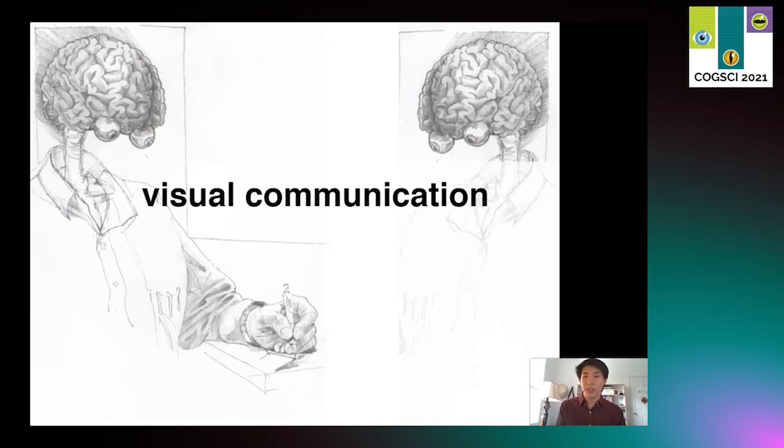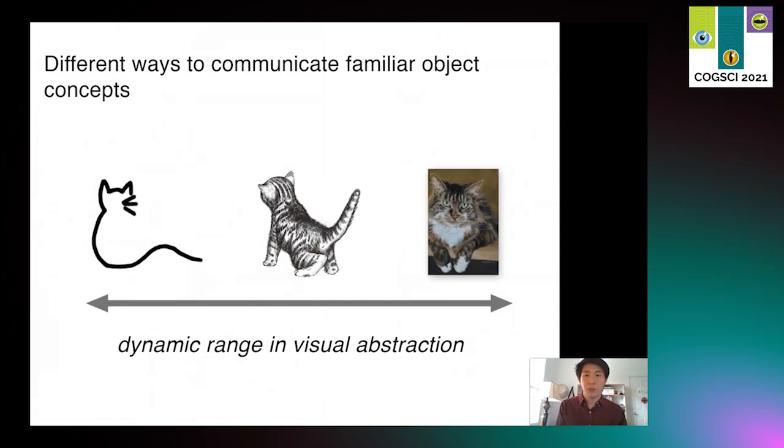Our goal in this project is to understand how the human mind is flexible enough to pull off these feats of visual abstraction, to effectively communicate what we see and know in visual form. Even in the relatively simple case of drawing a cat, we can do so in lots of different ways, spanning a large range of abstraction from simple sketches to detailed drawings to highly photorealistic renderings. What underlying cognitive mechanisms explain how and why we produce such varied drawings?